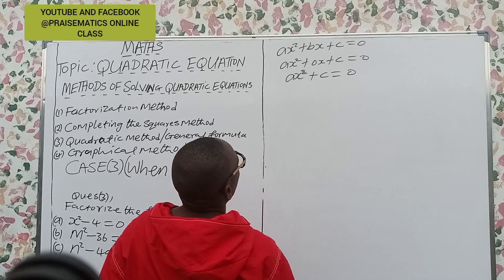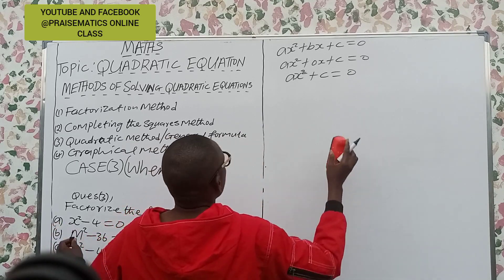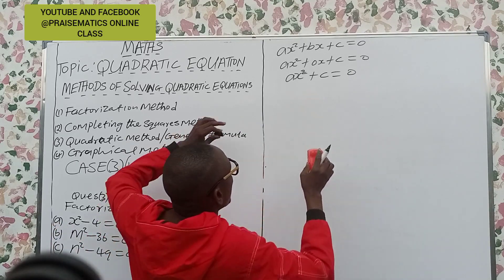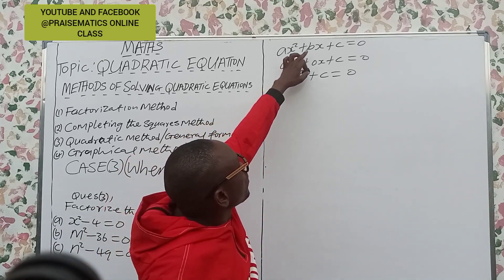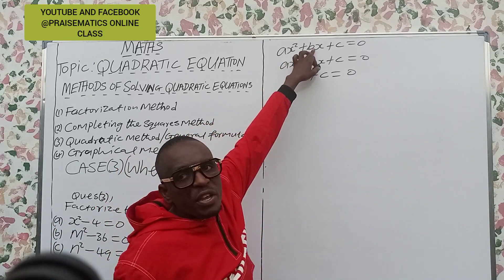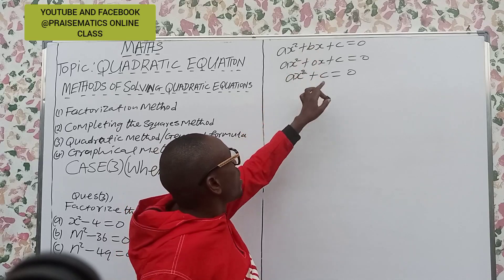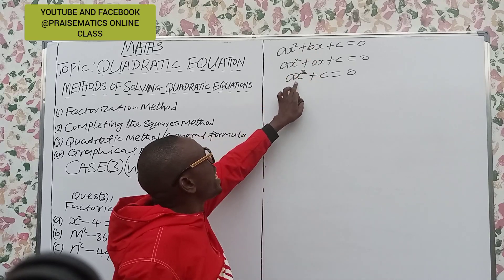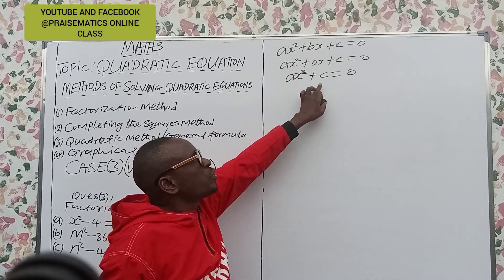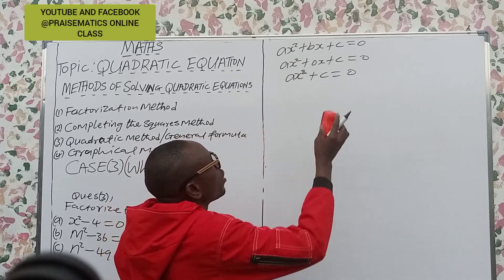So that is the case we are solving — a case whereby the coefficient of b, the coefficient of x, is 0. That means what we have is ax² + c = 0.